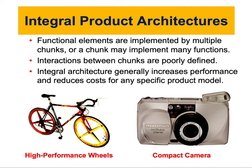Examples of integral architecture include a high-performance wheel, where the design is very precise because each part integrates with other parts and adds to their functionality. Another example is the compact camera: space is limited and we want to make it as small as possible, so many parts need to perform multiple tasks. For example, the casing incorporates the flash, which can go inside and outside, making the space very compact. Integral architecture is suited for advanced products where performance is key and manufacturing cost must be minimized.